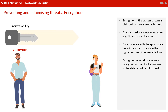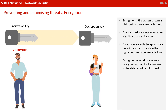And finally, encryption. This is the process of turning plain text into an unreadable form. The plain text is encrypted using an algorithm and a unique key. Only someone with the appropriate key will be able to translate the ciphertext back into readable form. Encryption won't stop you from being hacked, but it will make any stolen data very difficult to read.